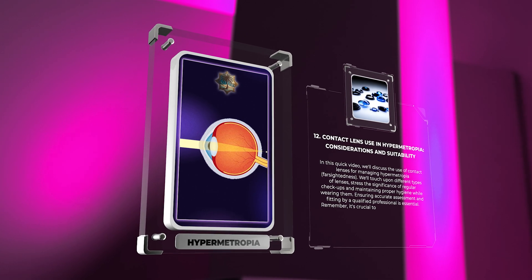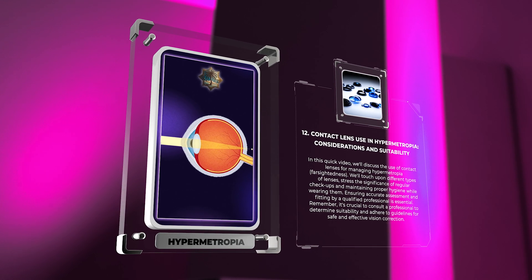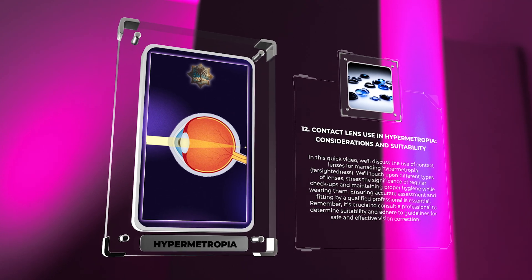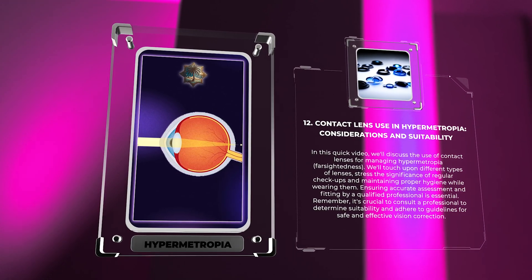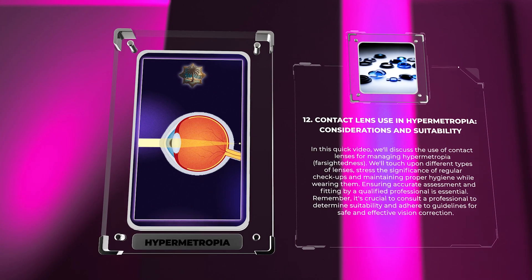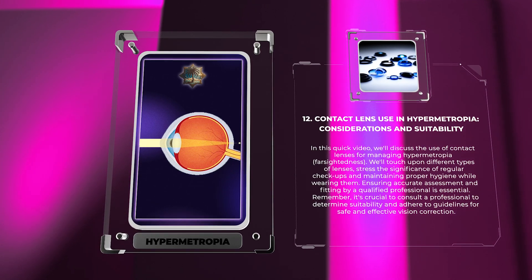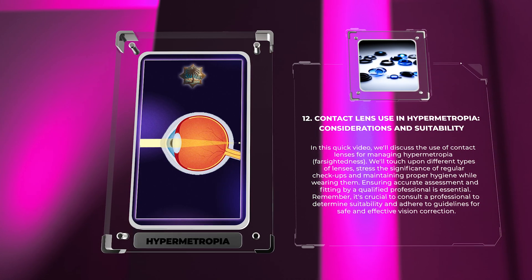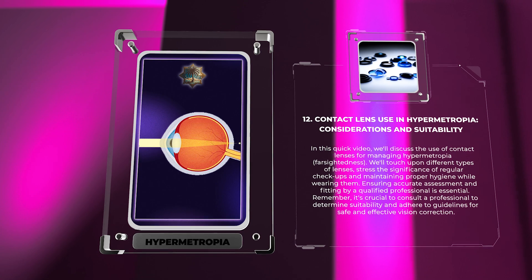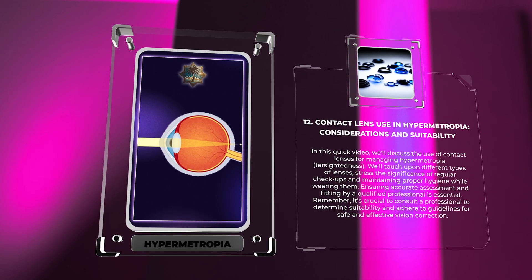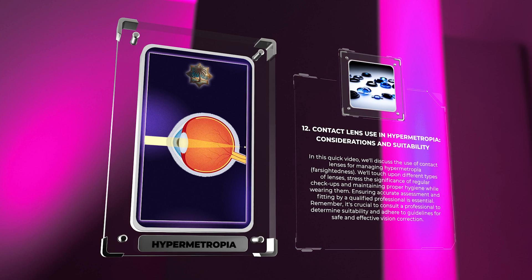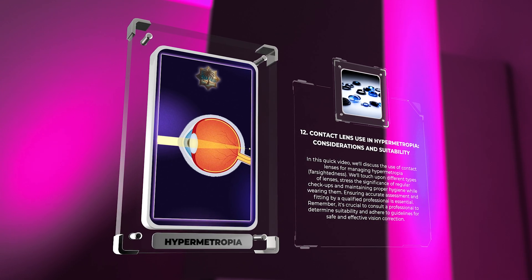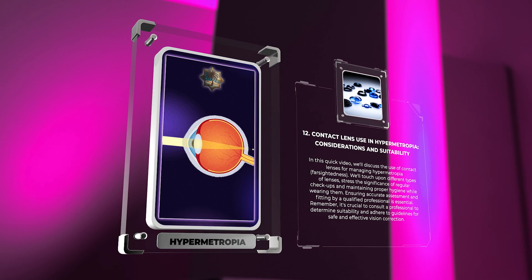We'll discuss the use of contact lenses for managing hypermetropia, touching upon different types of lenses and stressing the significance of regular checkups and maintaining proper hygiene while wearing them. Ensuring accurate assessment and fitting by a qualified professional is essential. It's crucial to consult a professional to determine suitability and adhere to guidelines for safe and effective vision correction.